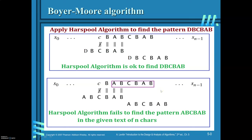Now we will see Boyer-Moore's string matching algorithm. Already you have learnt the Horspool algorithm. Horspool is an efficient algorithm and here you are minimizing the number of comparisons by using the shift table. Instead of shifting the pattern by one character length, you are shifting based on the shift table, towards the right. So this is an example for both Boyer-Moore and Horspool algorithm — an example for input enhancement.